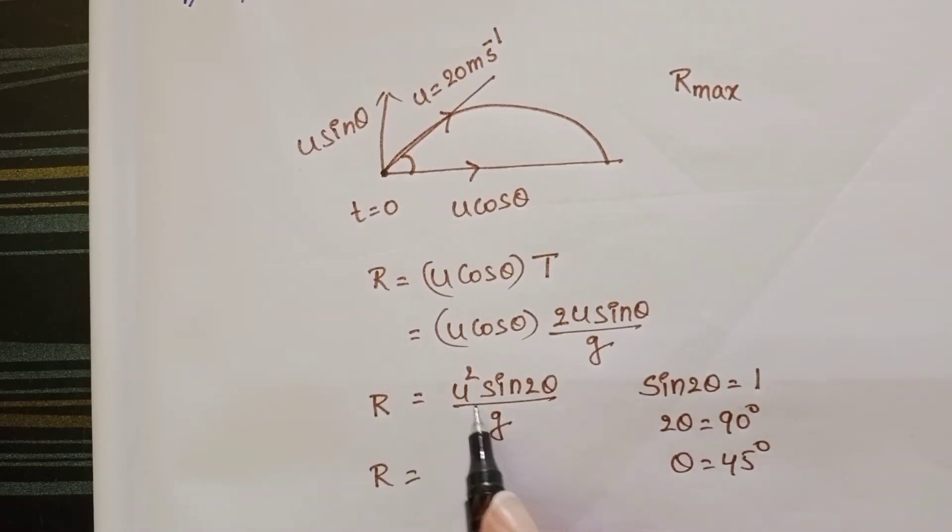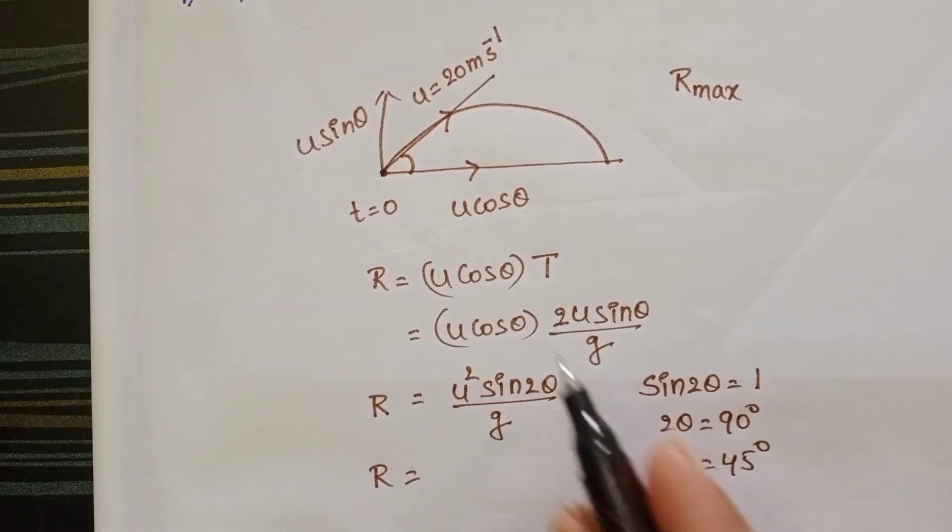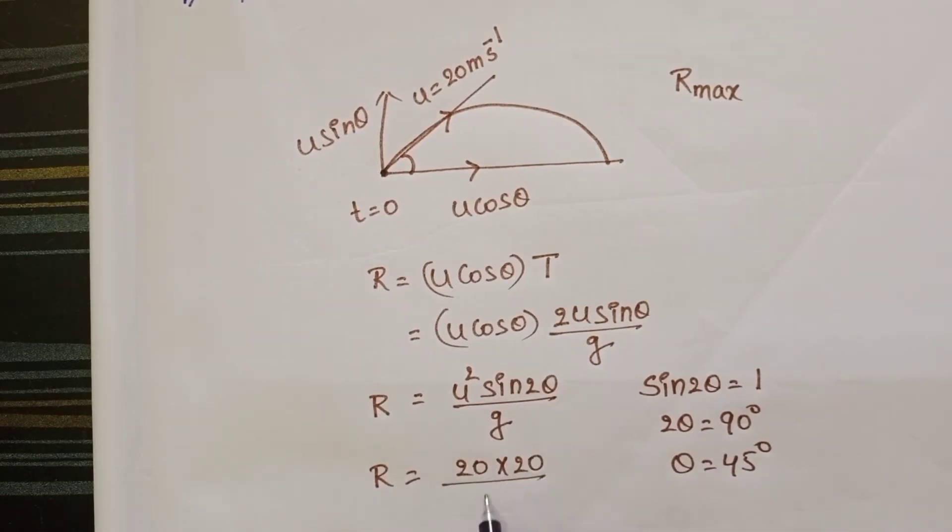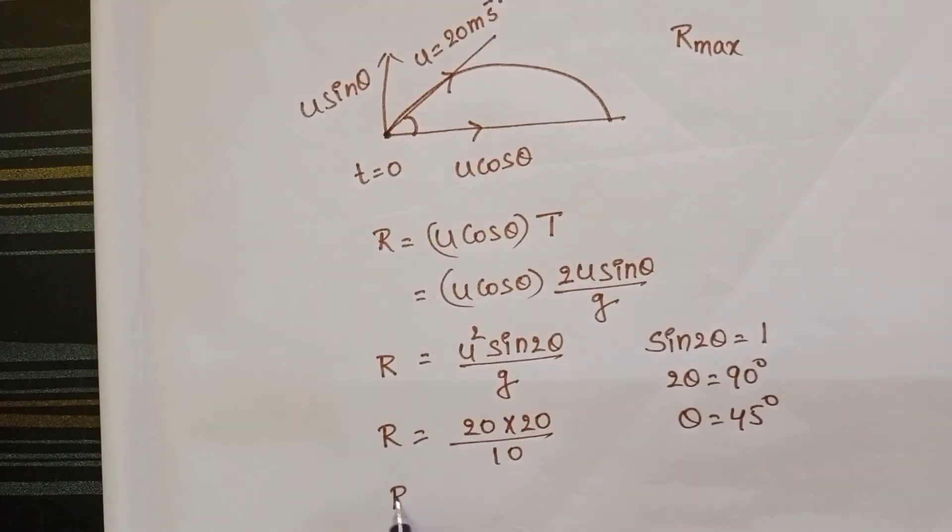So R is equals to u square by g. U value 20. So 20 into 20 by 10. So range is equals to 40 meters.